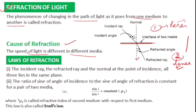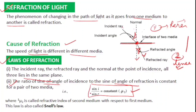There are two laws of refraction. First: the incident ray, refracted ray, and normal at the point of incidence all lie in the same plane. Second: the ratio of sine of angle of incidence to sine of angle of refraction is always constant — sin i / sin r = constant. This constant is called the refractive index. This second law is also called Snell's law.